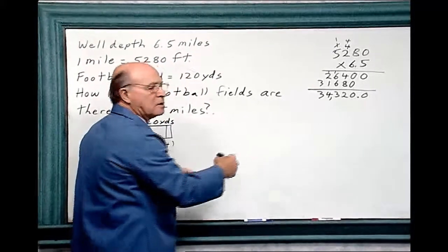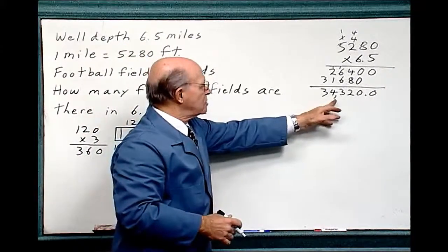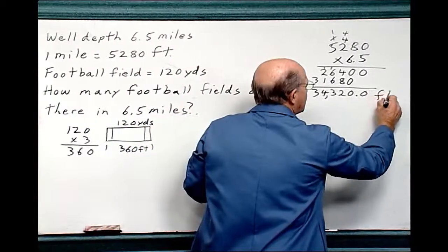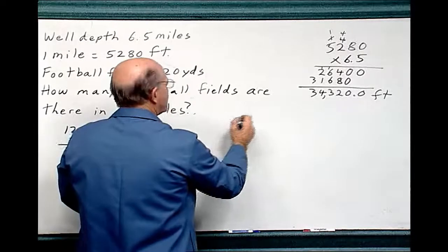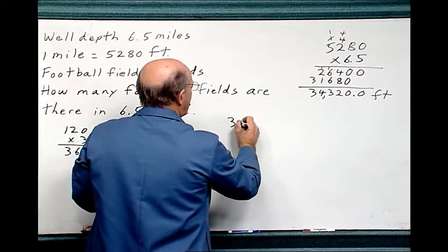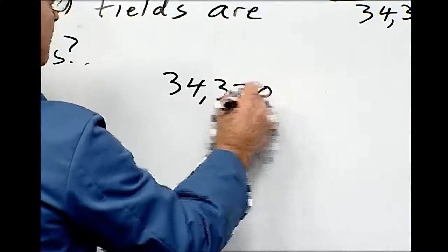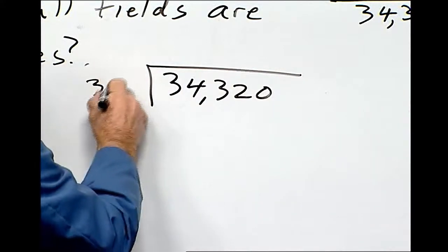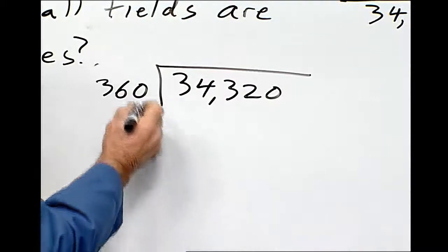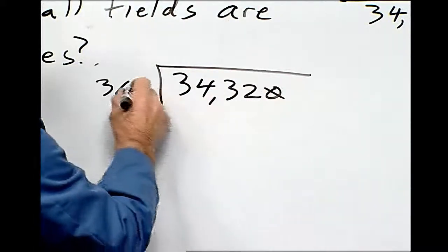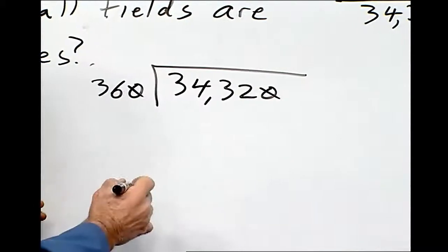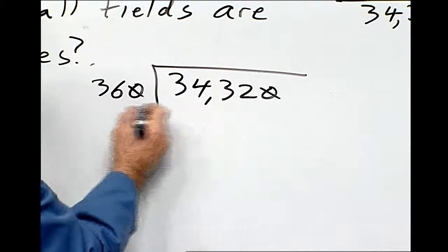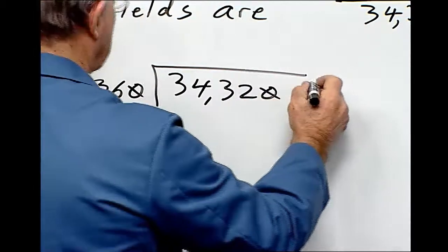Now how many football fields goes into 34,320 feet? Let me put feet over here, because that's what this is. So let's do the math then. So it's 34,320 divided by 360. Remember a shortcut where you've got zeros on both ends, you just can remove them on either end, the dividend and the divisor. So how many times does 36 go into 34? It doesn't. 36 goes into 343. It looks like it's 9 times.